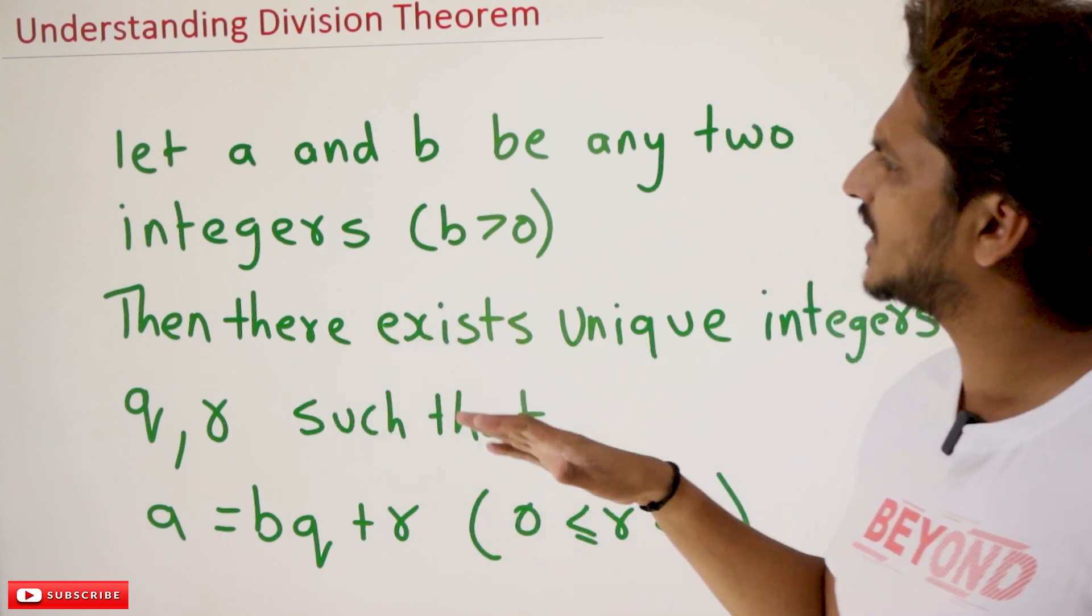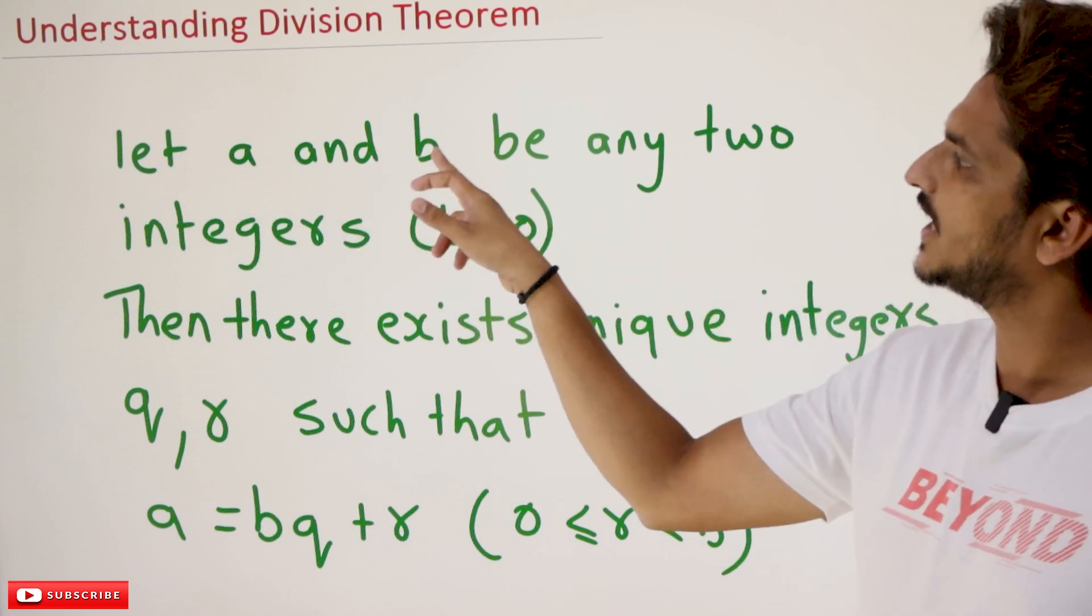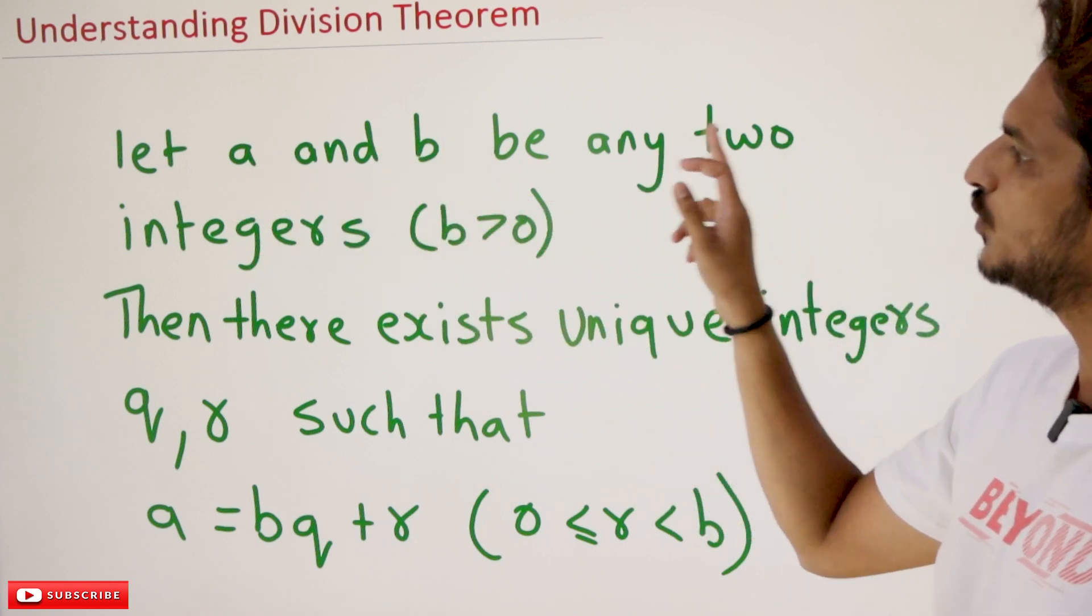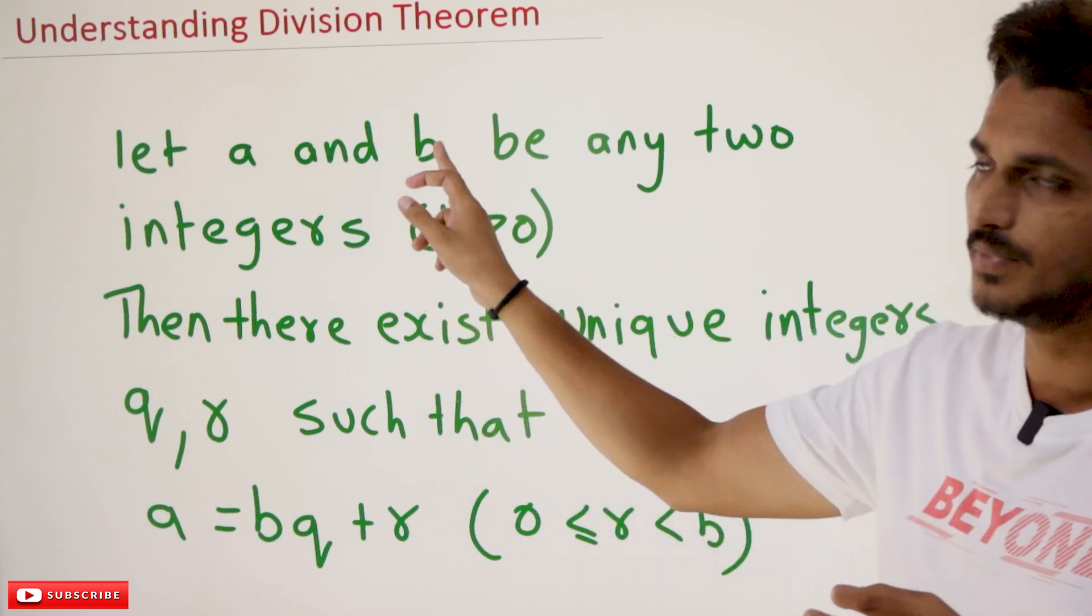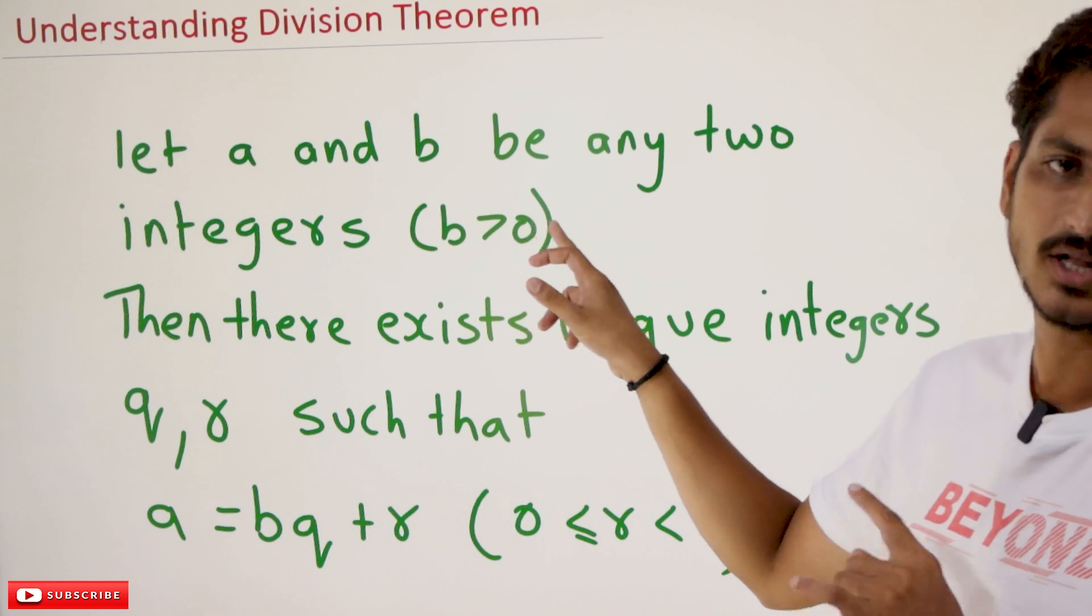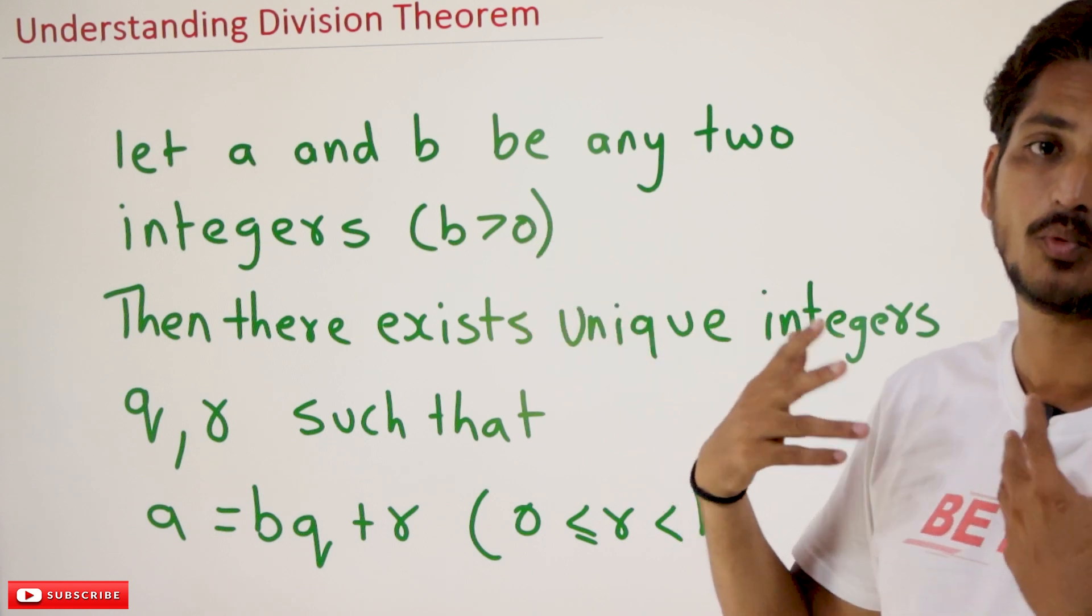Now coming to the concept, let A and B be any two integers. You take any two integer values, A and B, but B should be greater than zero.